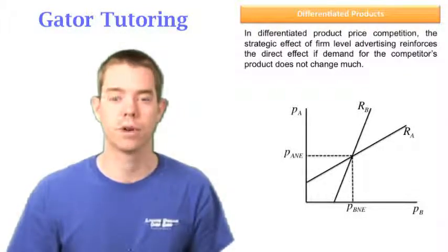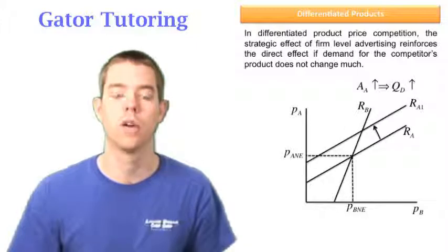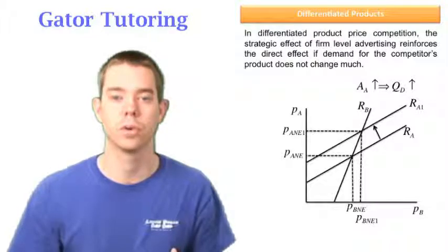Let's say A is the firm advertising here. We know that the new Nash equilibrium price for A should be higher than the old one, and that will help us draw our shift. We know it should shift to the left, because that new Nash equilibrium price is higher than the old one.